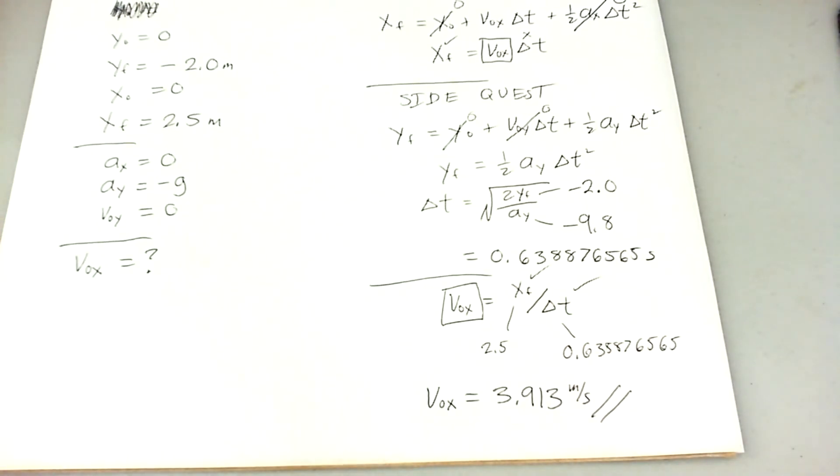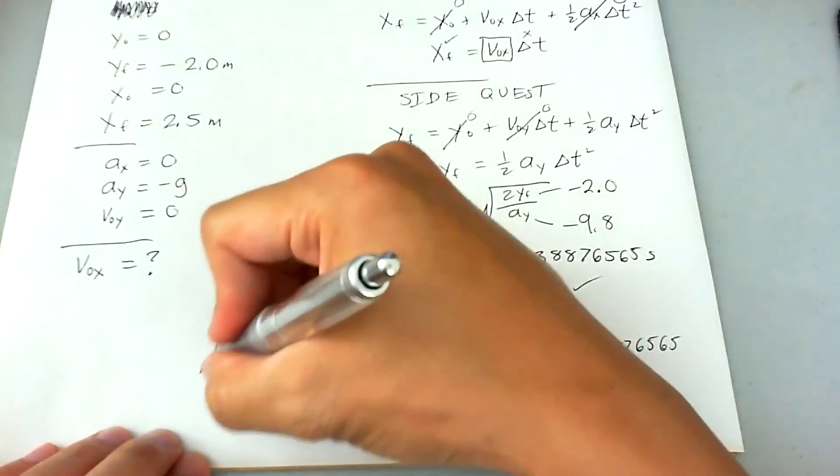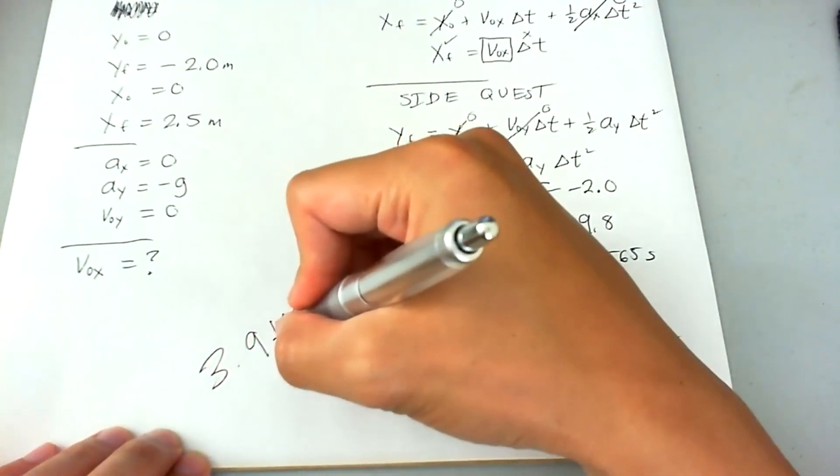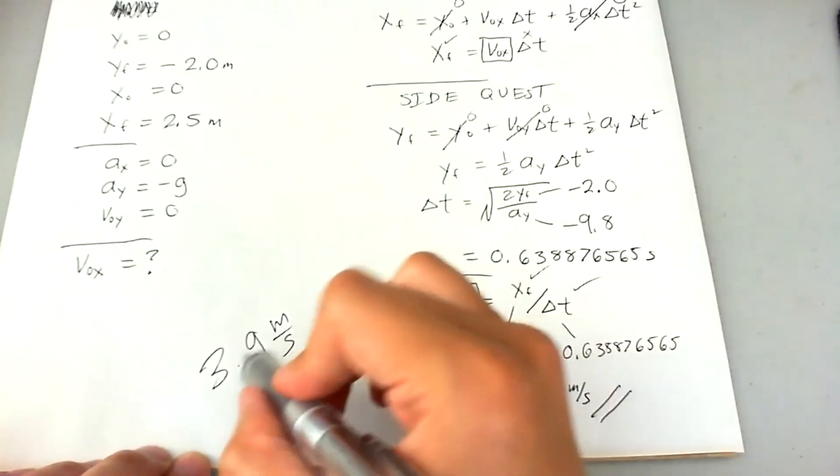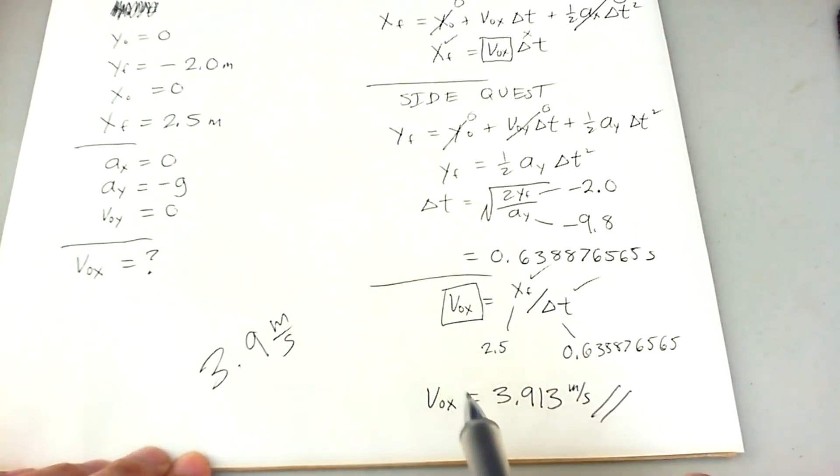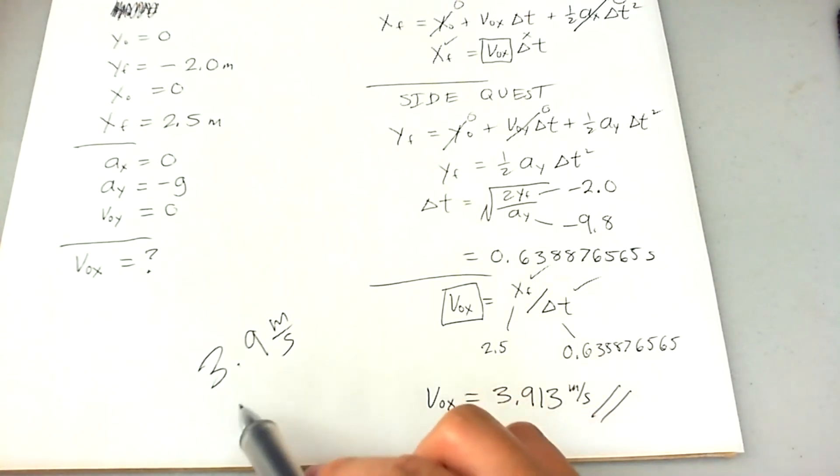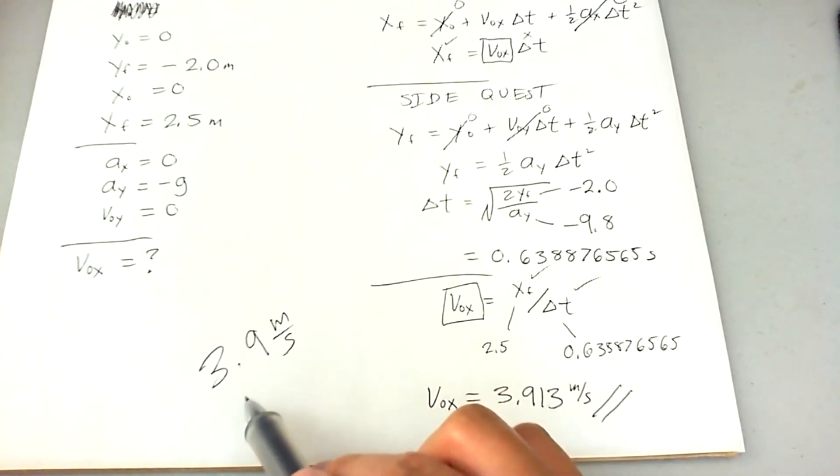The funny thing is that on the multiple choice, it says the closest answer is 3.9 meters per second. So technically, if you were to pick this, the stuntman would have fell short of his minimum requirement and he would have actually plummeted to his death.